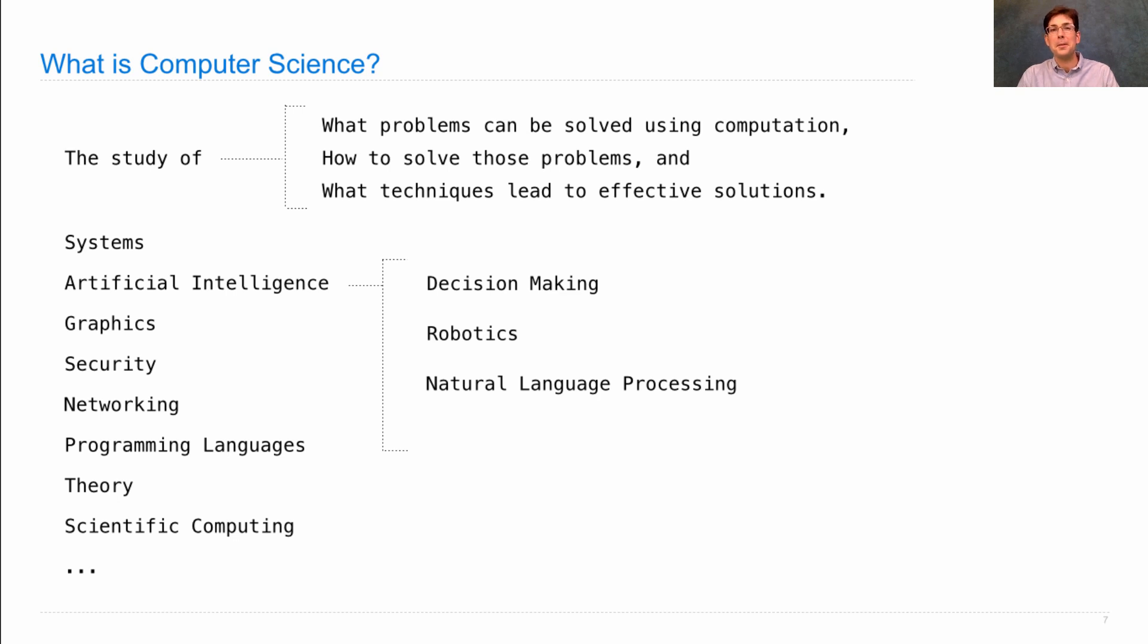And each sub-subfield has its own sub-sub-subfields. So one thing you might do in natural language processing is automatically translate from one language to another, or answer questions. The best Jeopardy player in the world is a computer.